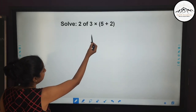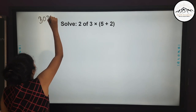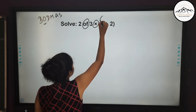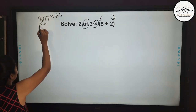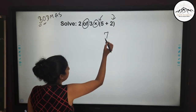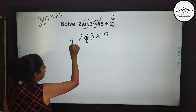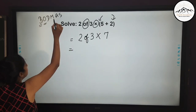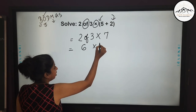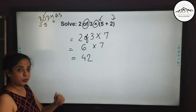Now solve: 2 of 3 into (5 + 2). Following BODMAS — B O D M A S — the bracket comes first. So we solve 5 plus 2 equals 7, write 7, and eliminate the bracket. Now we have 2 of 3 into 7. There is 'of' and multiplication remaining, and 'of' comes before multiplication. So 2 of 3 means 6, then 6 into 7 equals 42. The answer to this problem is 42.